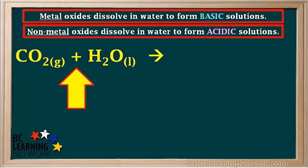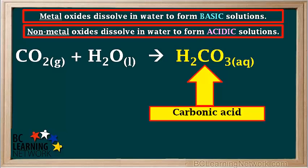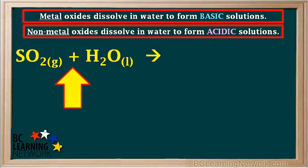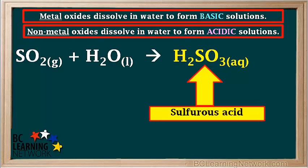Nonmetal oxides do not form hydroxide compounds. The nonmetal oxide carbon dioxide, CO₂, dissolves in water and reacts to produce H₂CO₃, or carbonic acid, which is a weak acid. The nonmetal oxide SO₂ reacts with water to produce sulfurous acid, which is also a weak acid.